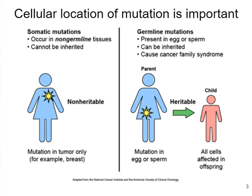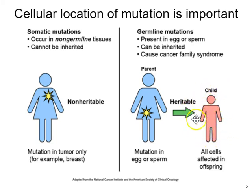Germline mutations are mutations in the cells that are going to undergo meiosis. Those cells are called myocytes, and they can produce eggs or sperm. The mutation will be carried within the genome in the egg or sperm and therefore inherited by the offspring. As this figure shows, a mutation affecting egg or sperm — perhaps in the myocyte or as it was differentiating — results in a heritable mutation that the child would have in every single cell of their body.